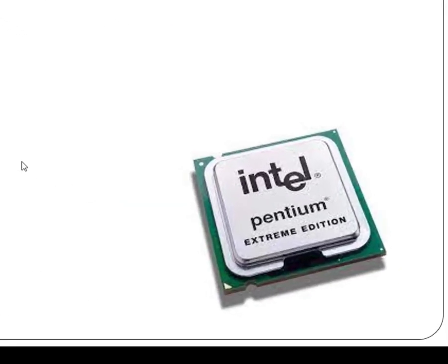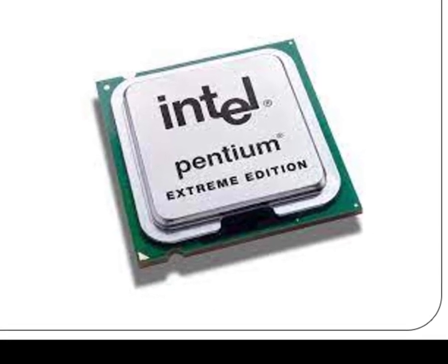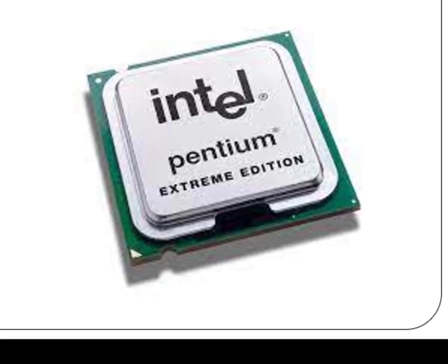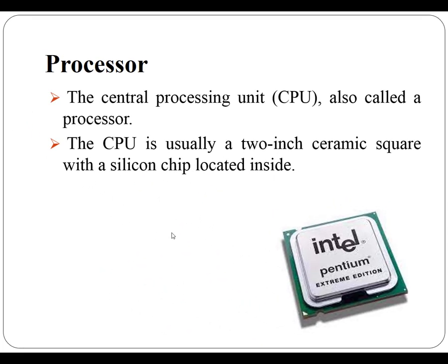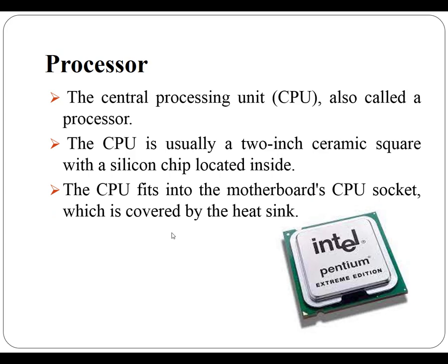The next important component is the CPU, central processing unit, also called the processor. It is located inside the computer case on the motherboard. It is also called the brain of the computer, and its job is to carry out commands. The CPU is usually a 2-inch ceramic square with a silicon chip located inside. The chip is usually about the size of a thumbnail.